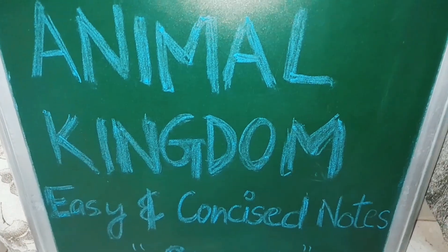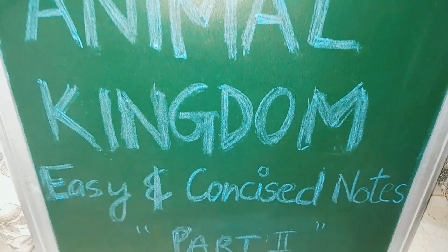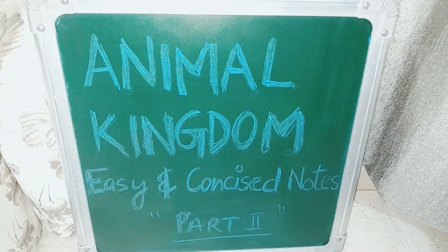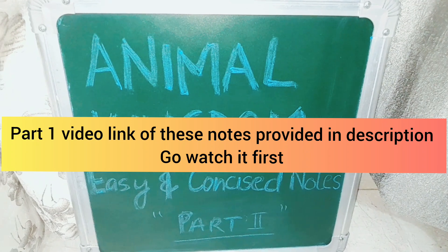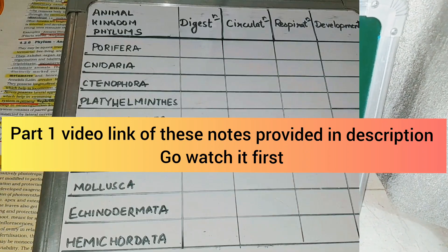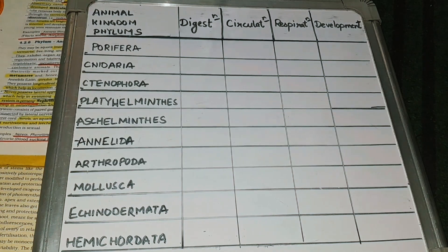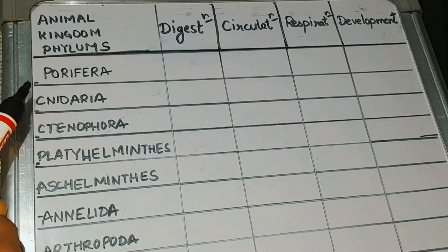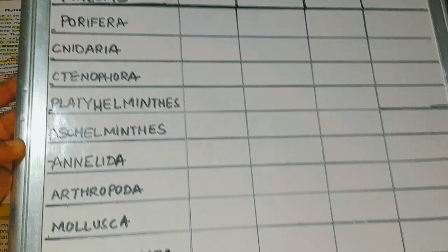Hello everyone. This is part 2 of the quick and concise notes of the Animal Kingdom chapter from Zoology. Please watch the first part also — then only you will understand this part. I have provided the link in the description. Today we will discuss the Animal Kingdom phylums on the basis of digestion, circulation, respiration, and development. I have written all the phylums.